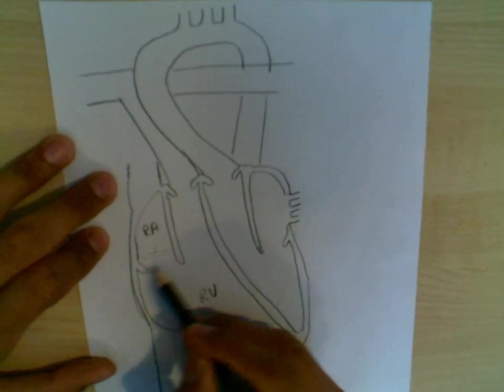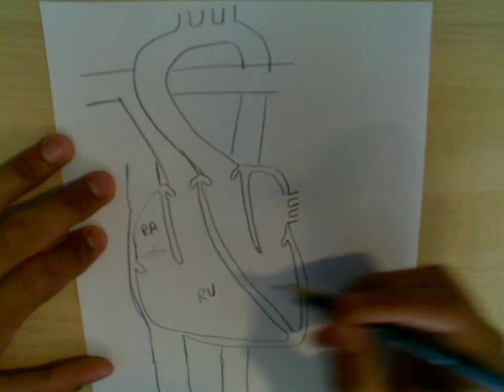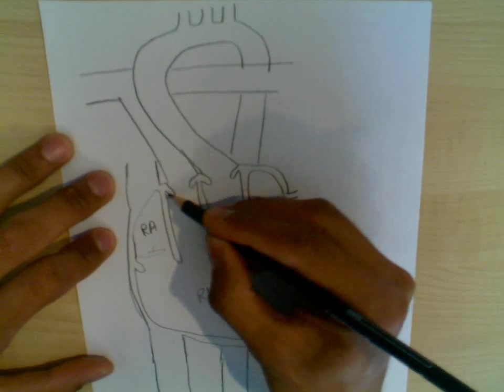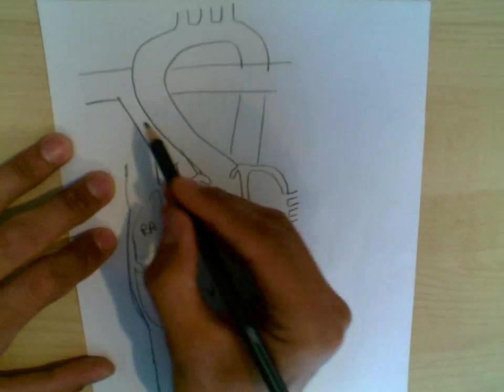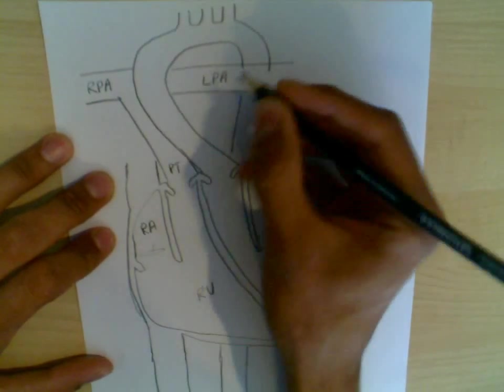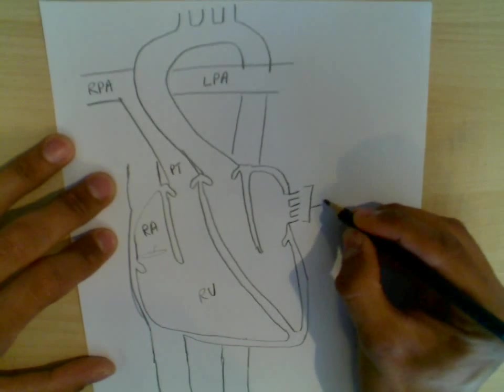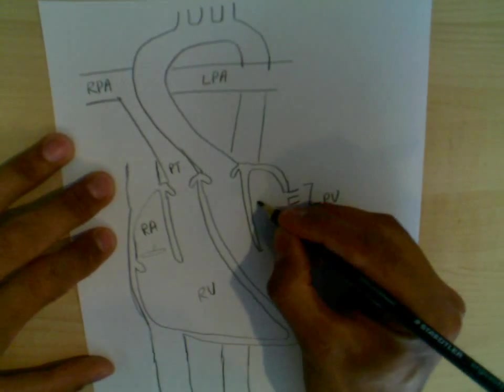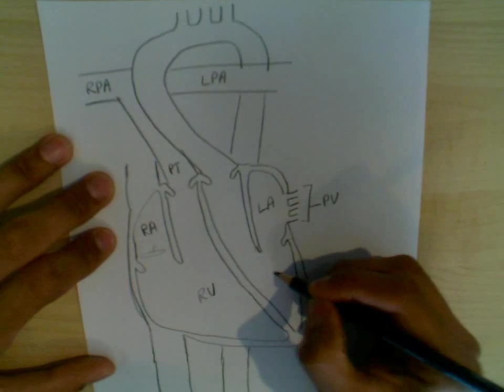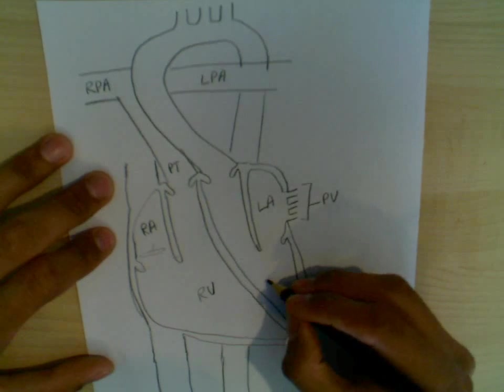This valve on the right side of the heart is known as the bicuspid or mitral valve. The right ventricle then contracts, pushes the blood through the pulmonary valve into the pulmonary trunk, which splits into the right pulmonary artery and the left pulmonary artery, going to the right and left lungs. The blood then returns through the pulmonary veins into the left atrium, passes through the bicuspid or mitral. Sorry, this is the tricuspid here. I said that wrong. This is tricuspid. This is bicuspid or mitral.